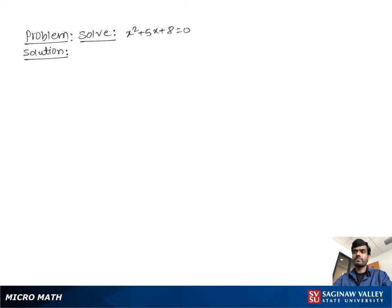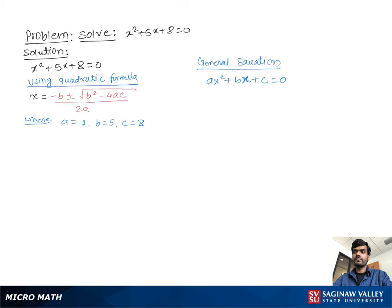Solve x squared plus 5x plus 8 equal to 0. Using the quadratic formula, x equals negative b plus or minus square root of b squared minus 4ac, all over 2a.